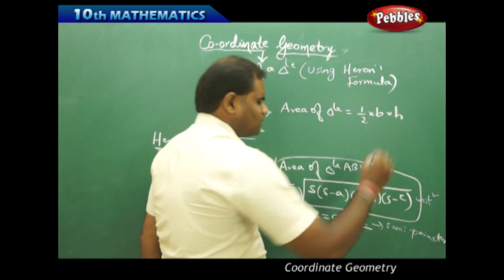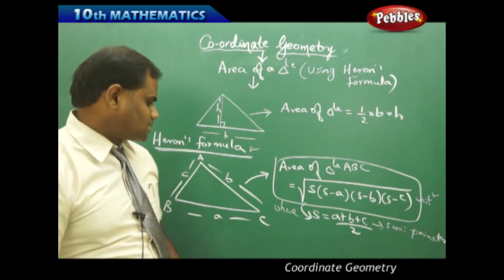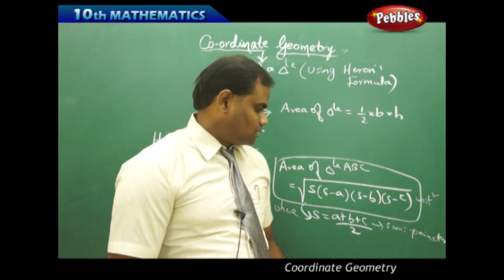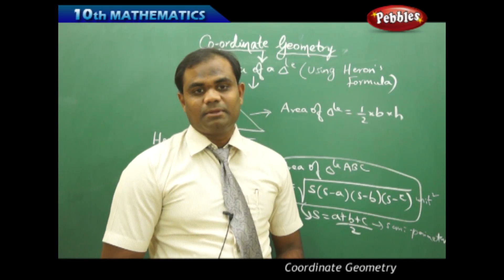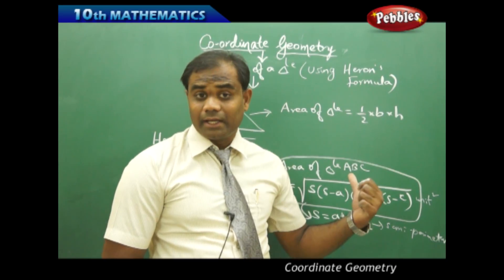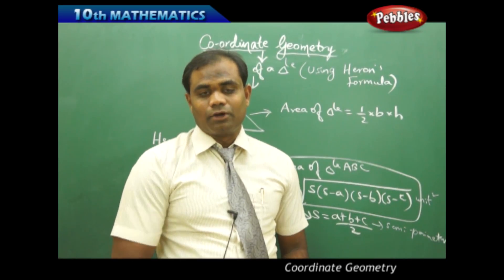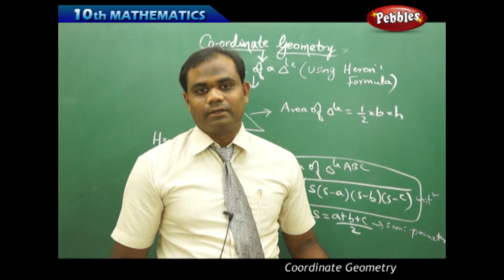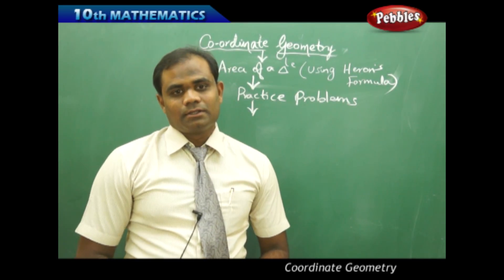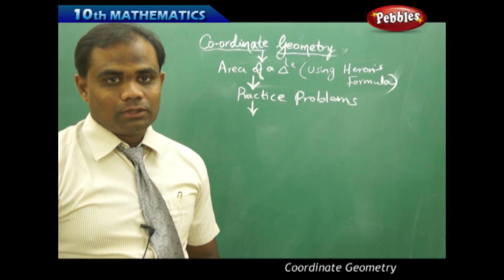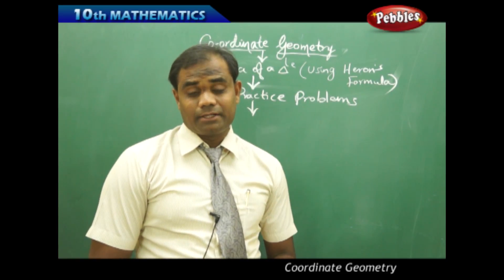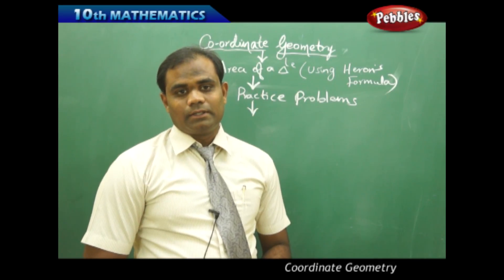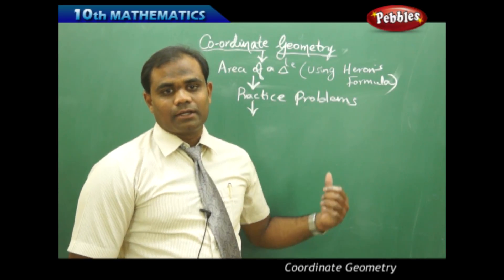S is defined as the semi-perimeter of triangle ABC, because it is half of the perimeter, which is A plus B plus C. So S is the semi-perimeter of triangle ABC. This is Heron's formula, used when the height of the triangle is not given. Let's find the area of a triangle whose dimensions are given but the height is not given, using Heron's formula, as a practice problem.